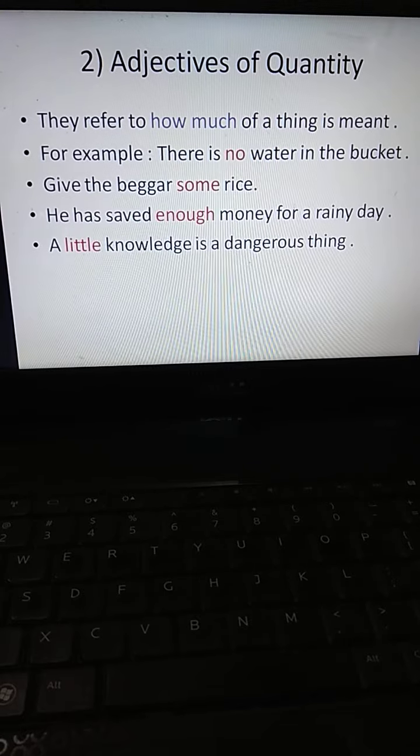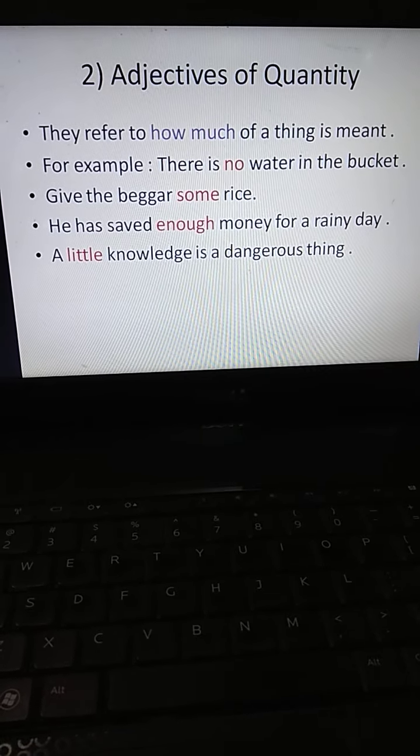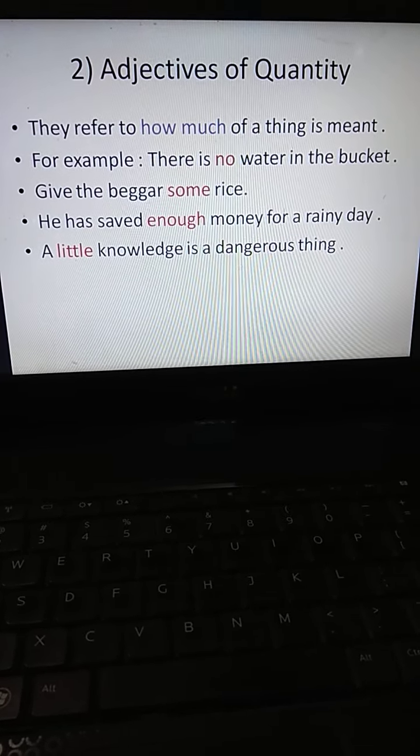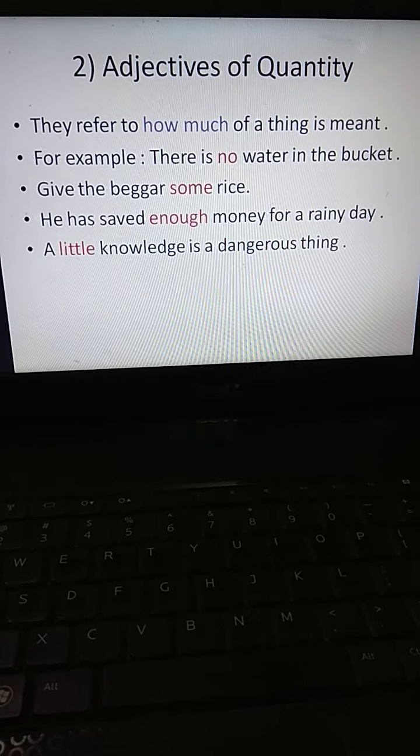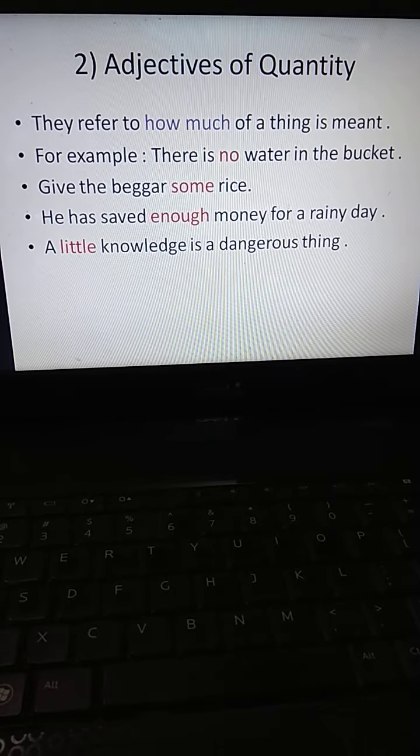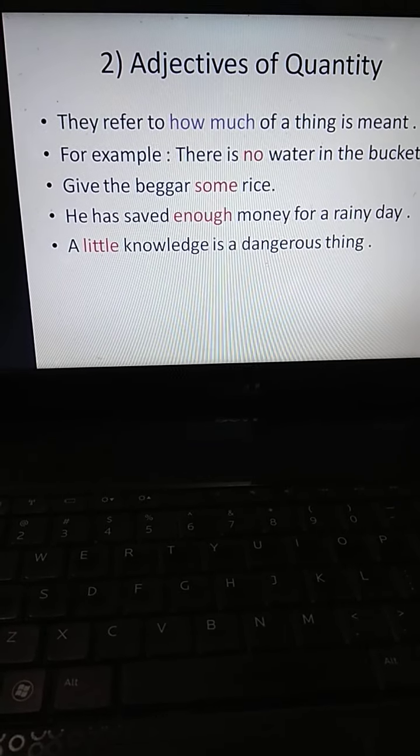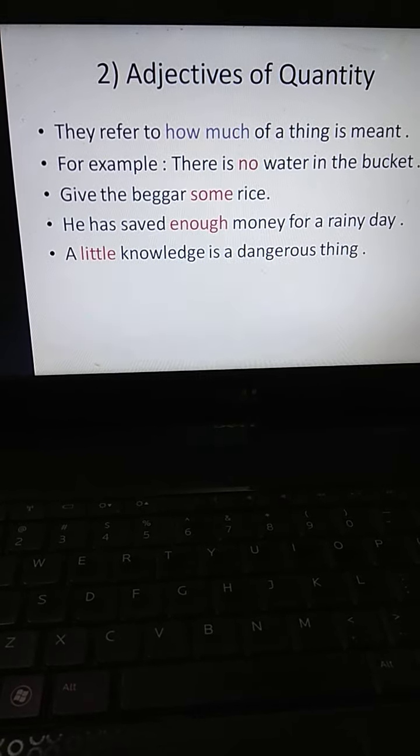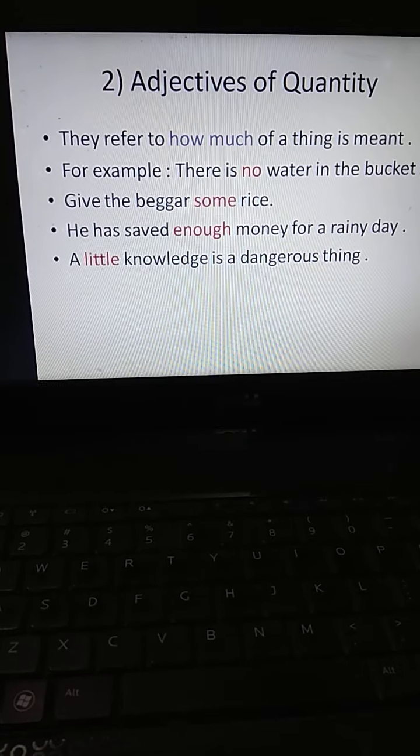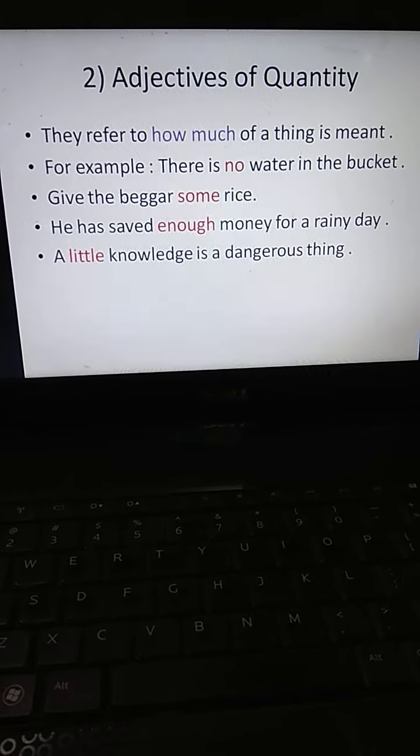Adjectives of quantity refer to how much of a thing is meant. For example: There is no water in the bucket. Give the beggar some rice. He has saved enough money for a rainy day. A little knowledge is a dangerous thing. The uncountable nouns such as grass, hair, rice, water, etc. can show us the quantity of the thing mentioned. Adjectives of quantity show us how much of a thing is meant.